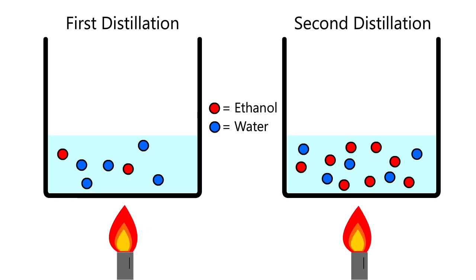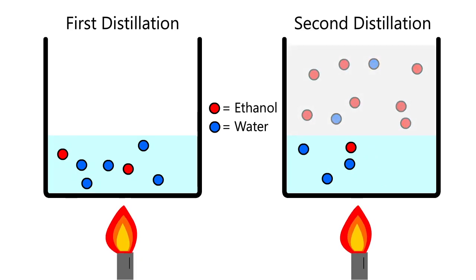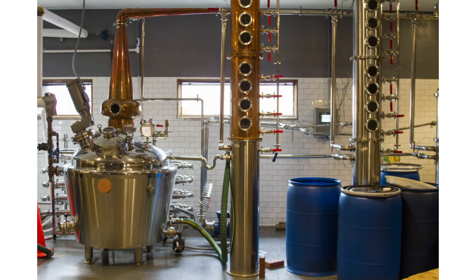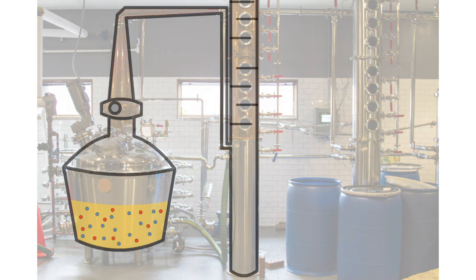If this concentrated ethanol vapor is then collected as a liquid and boiled again, the new vapor mixture will have an even higher fraction of ethanol. As the fraction of ethanol in the mixture increases, the boiling point of the mixture decreases. Distillers use these principles to increase the ethanol content of their drinks.